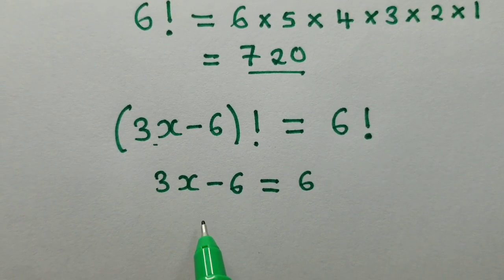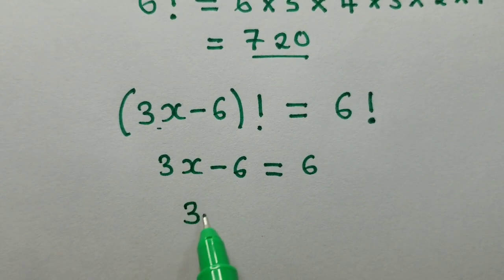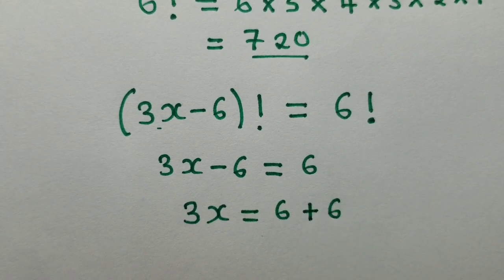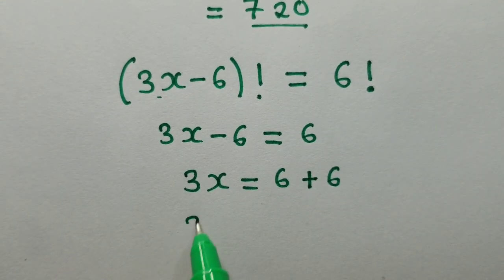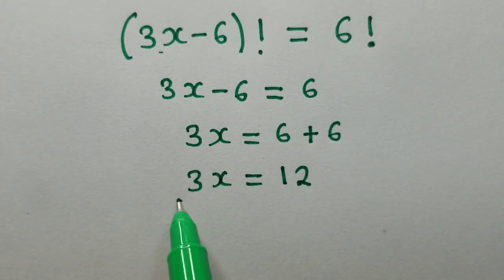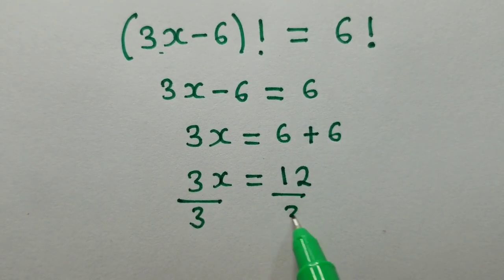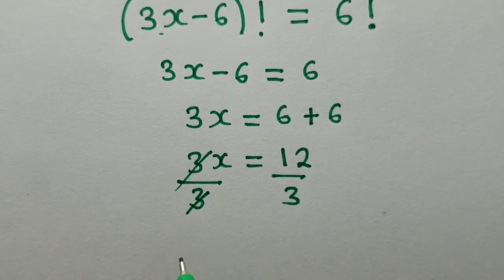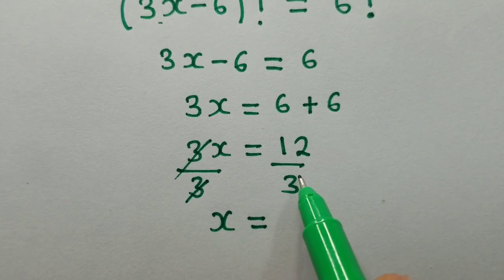So now we can solve the equation. We just copy what is here and what is here without the factorial. So when we solve, we're going to have 3x is equal to 6 plus 6, 3x is equal to 12. So when we divide by 3, because we want to find the value of x, this 3 and the 3 here will cancel.